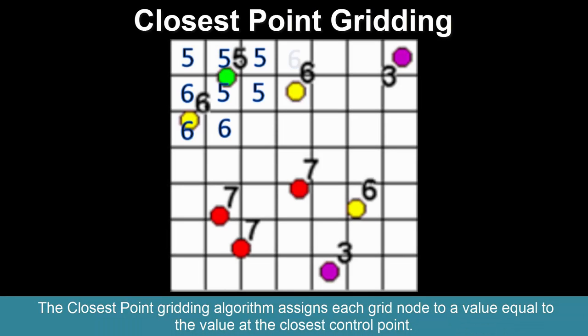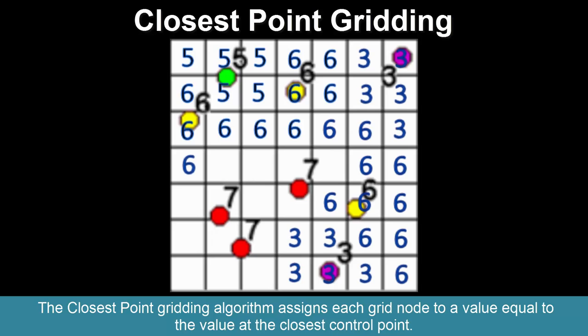The closest point gridding algorithm assigns each grid node to a value equal to the value at the closest control point.